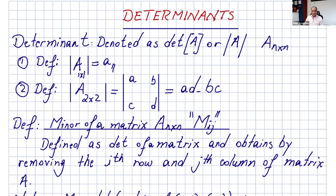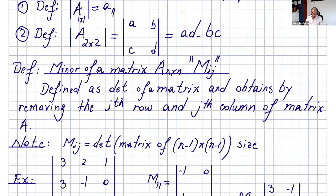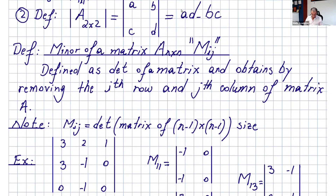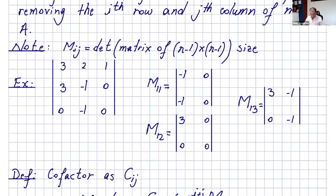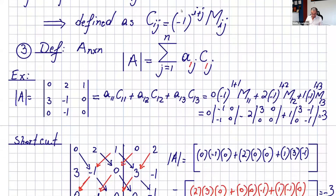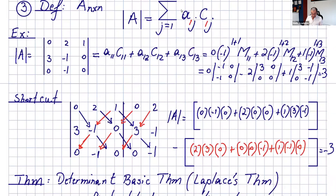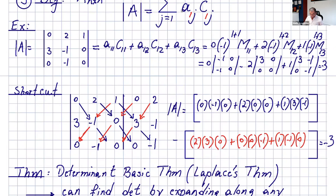Hi everyone and welcome to this video. Again, this video will be about determinants. Just to refresh your memories from the last video: I talked about how to find the determinant of a 2x2 or 3x3 matrix. We talked about minors and cofactors of a matrix. Please review that video. We also found the determinant of a 3x3 matrix using the first row expansion and the shortcut.